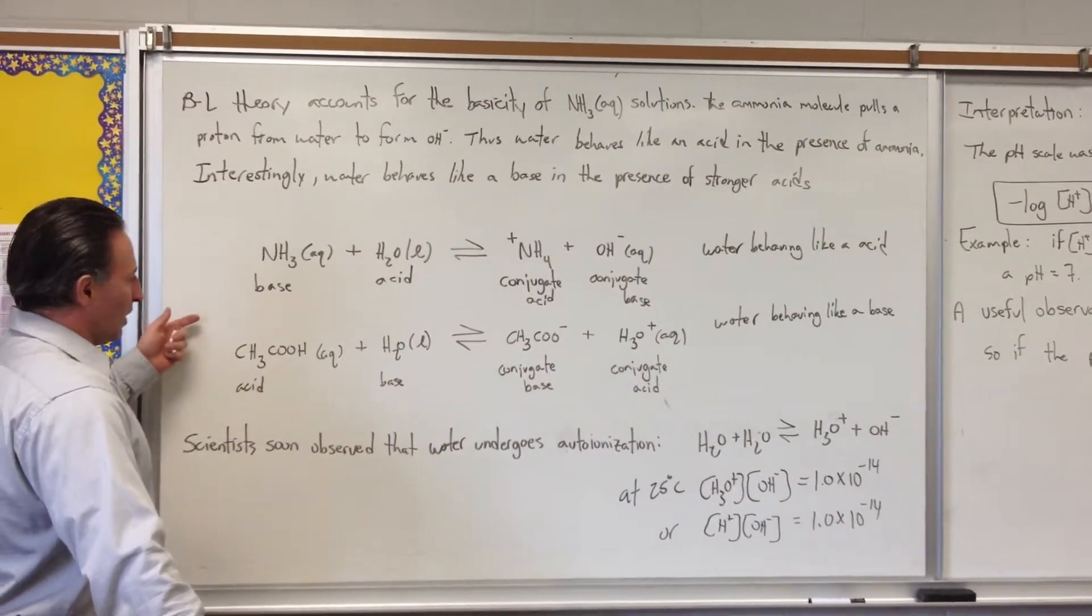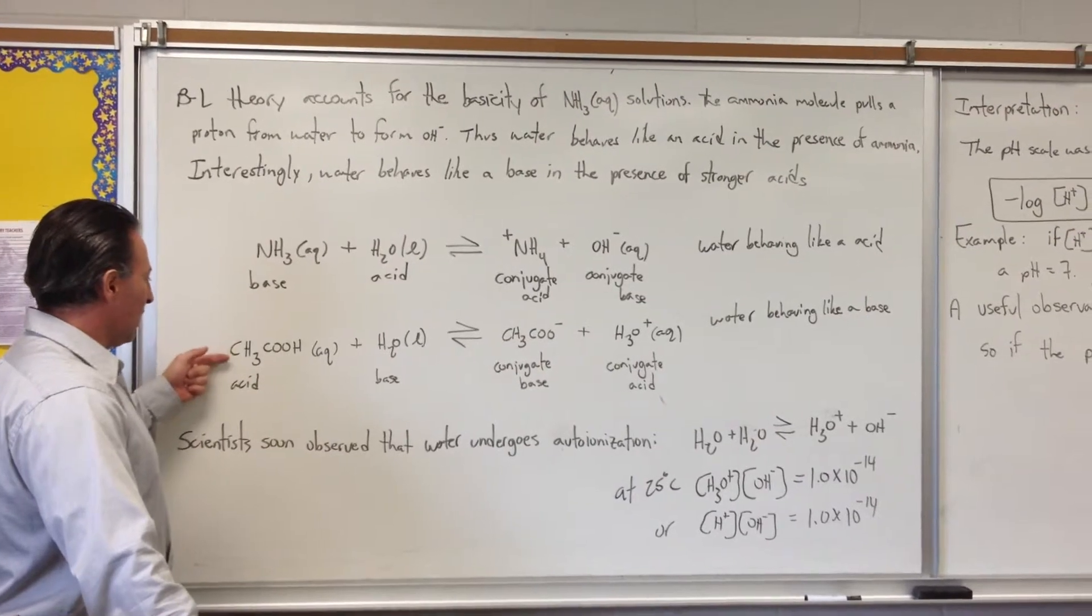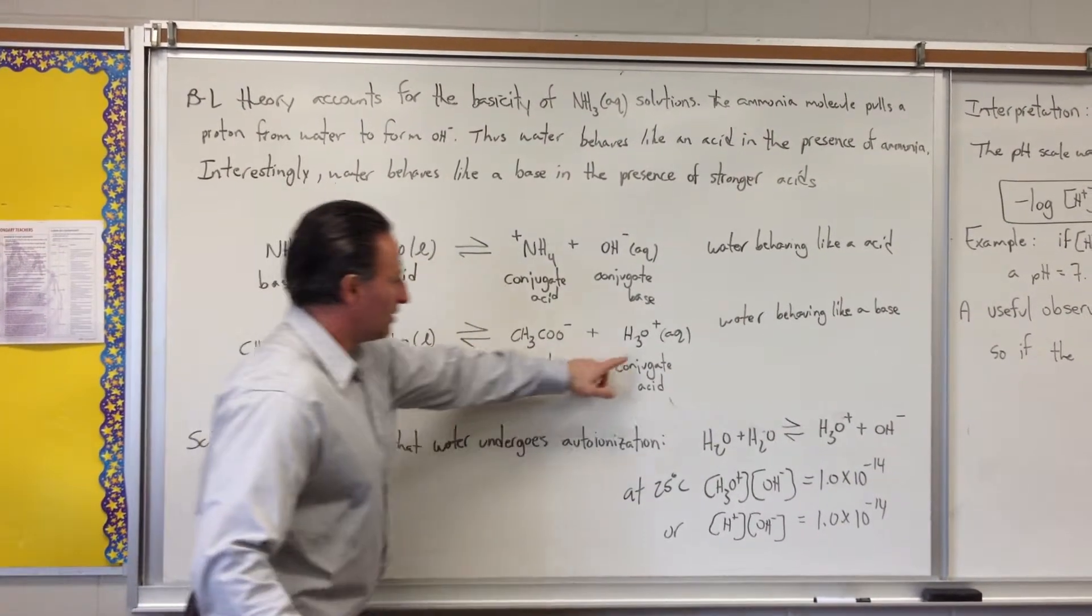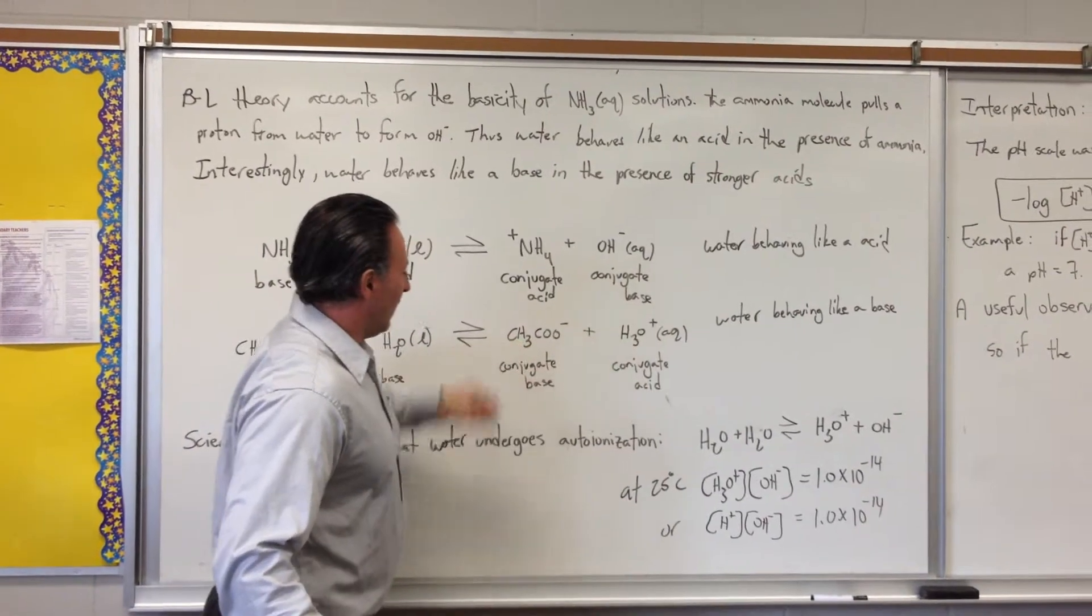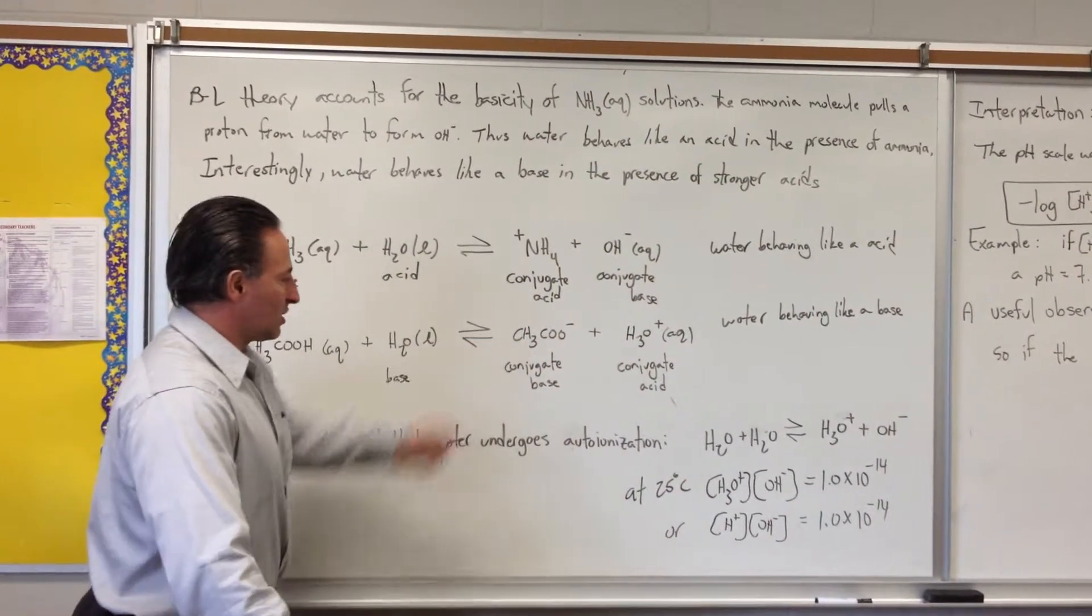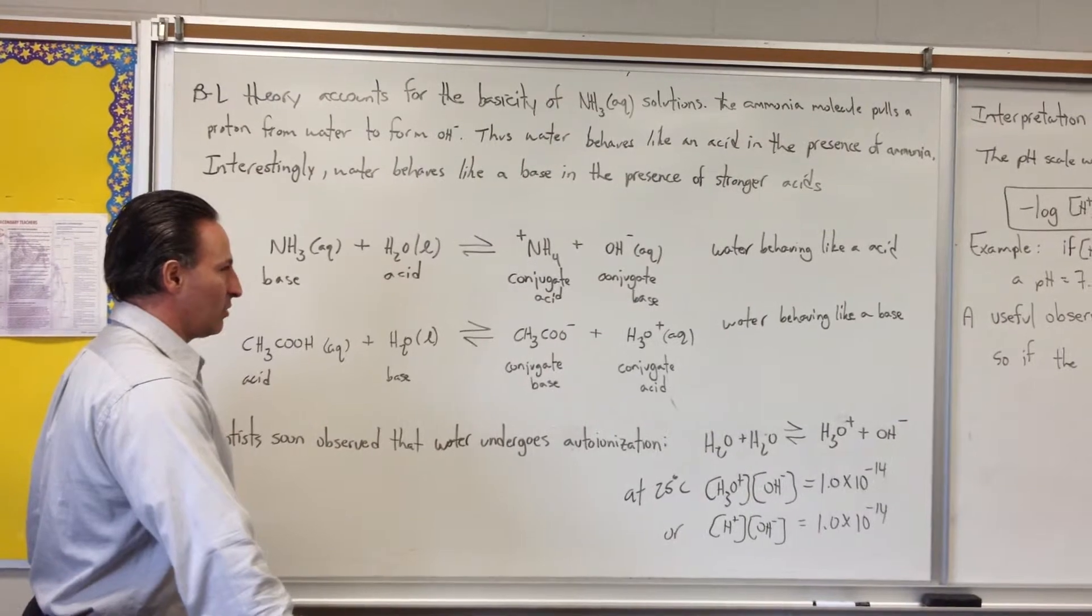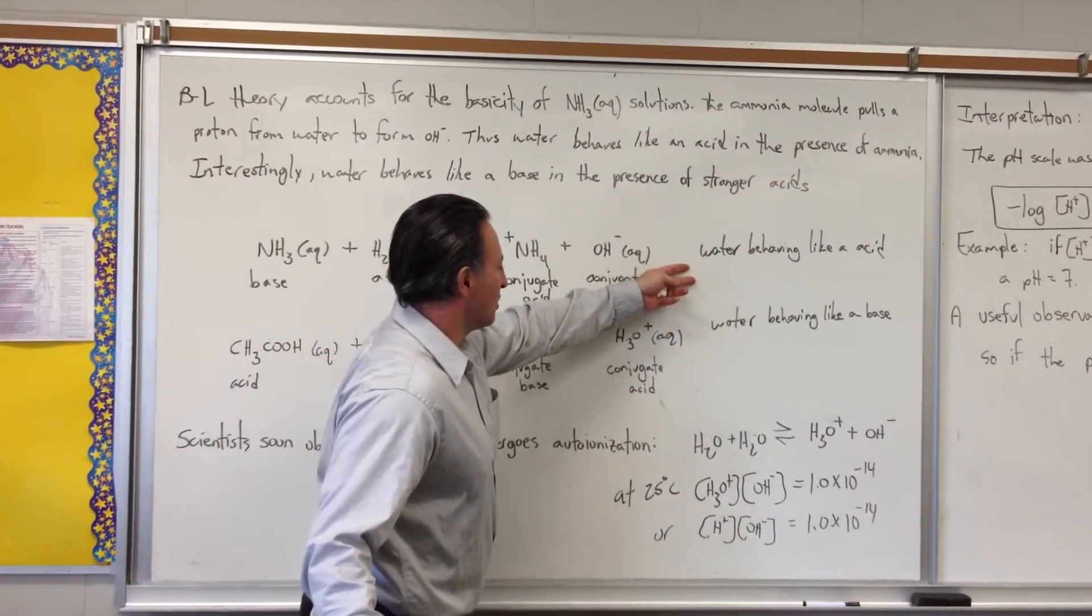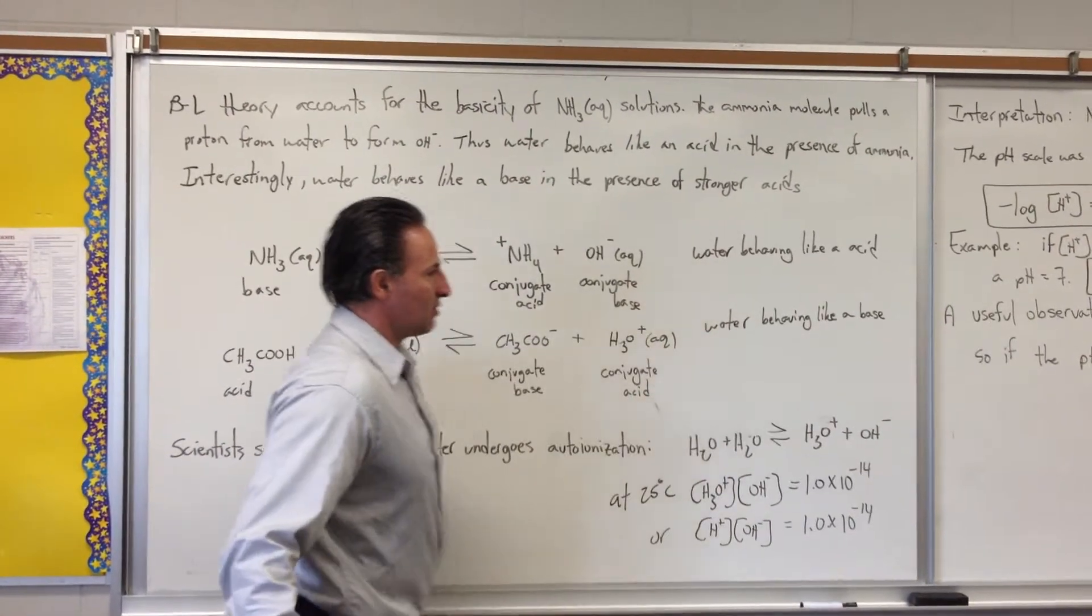If you look at the way water behaves with an acid like acetic acid, the acetic acid can donate a proton to the water to generate the hydronium ion, and what results is a conjugate base, the acetate anion, which is slightly basic. Here, in both cases, you have water behaving like an acid under these conditions, and water behaving like a base under these conditions.